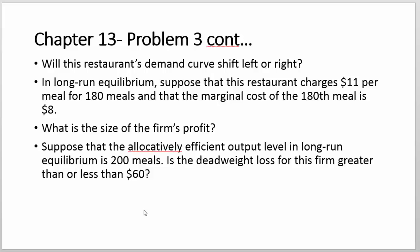The next part of the problem: in long run equilibrium, suppose this restaurant charges $11 per meal for 180 meals, and that the marginal cost of the 180th meal is $8. What is the size of the firm's profit? We don't have to do any calculation. By definition, when we're talking about a monopolistic competitive firm, we know that in the long run the firm's profit is a normal profit — there is no economic profit.